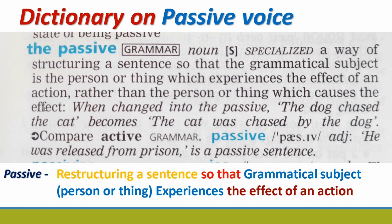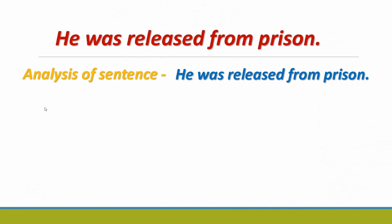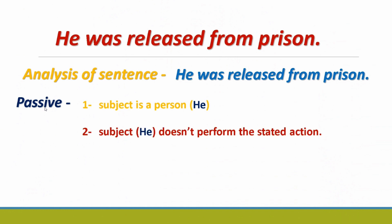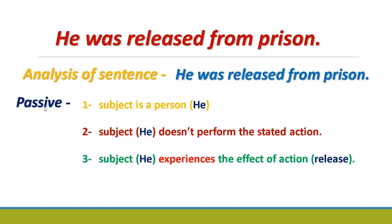In passive voice, the doer may be hidden. Consider this sentence: 'He was released from prison.' We will analyze this sentence. This is in passive voice because the subject is a person — 'he' — and without a subject there can be no sentence. The subject 'he' does not perform the stated action; rather, he experiences the effect of the action. Release is happening to him — its effect is falling on him; he is not doing it.